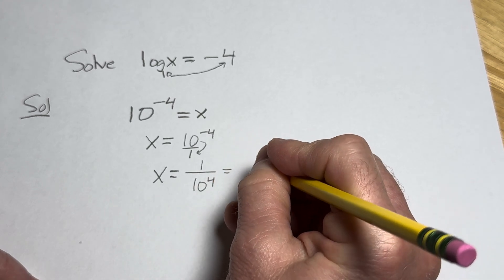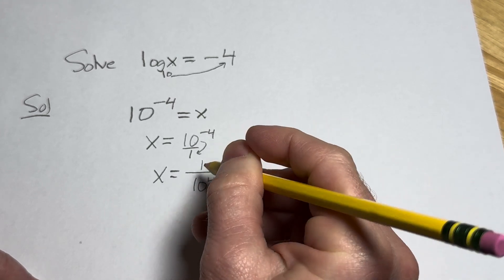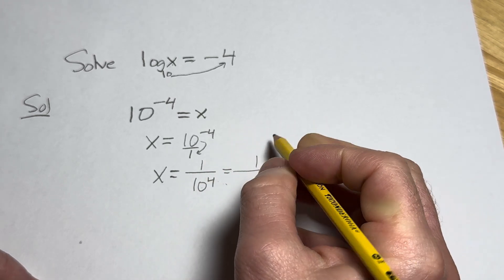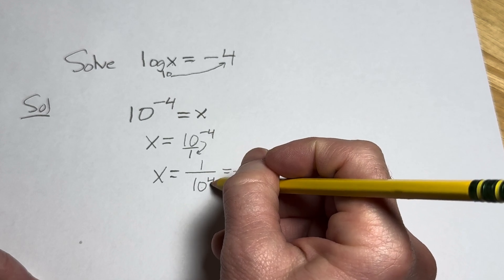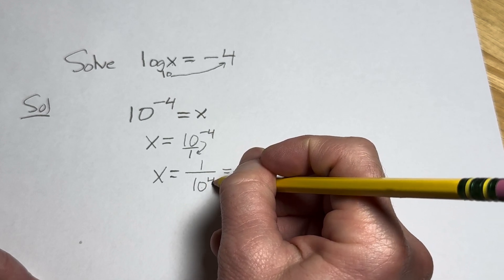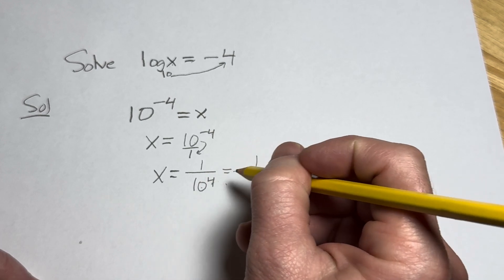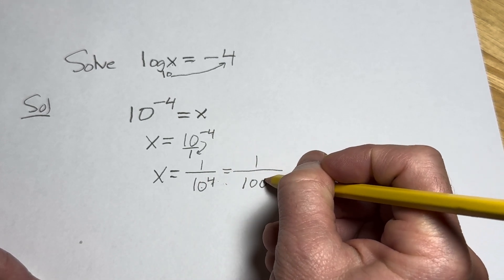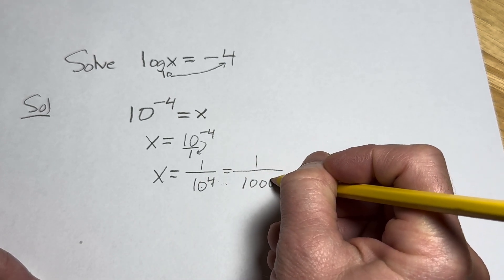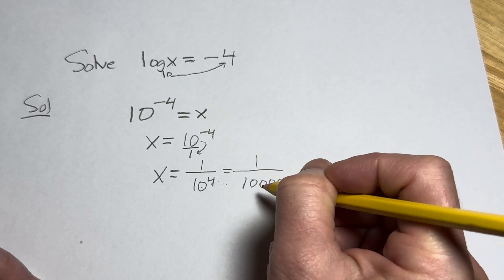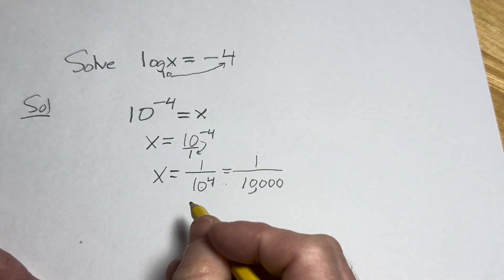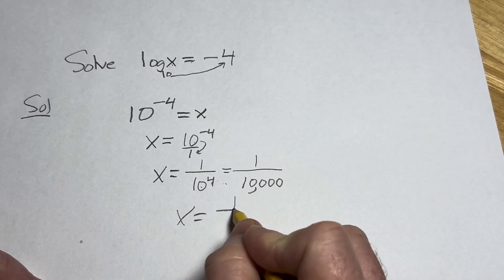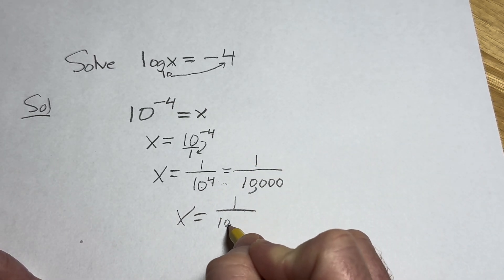So this is equal to 1 over — and whenever you have 10 to a power, you basically just count the zeros. There's 4 here, so there are 4 zeros: 1, 2, 3, 4. So the answer is x equals 1 over 10,000.